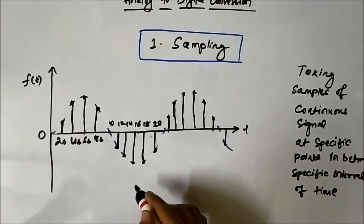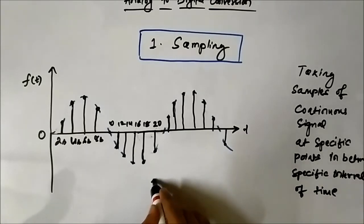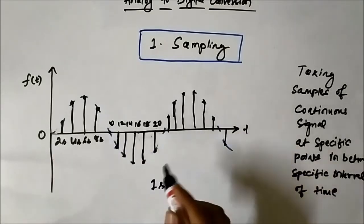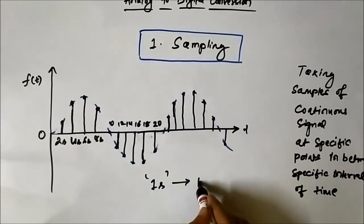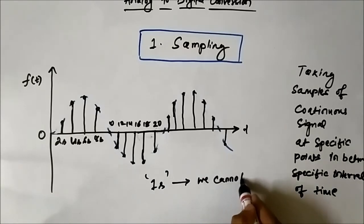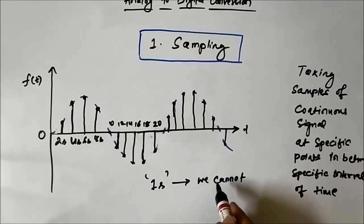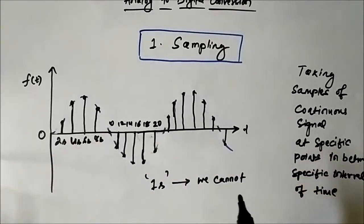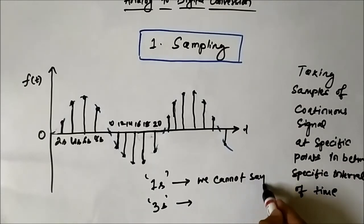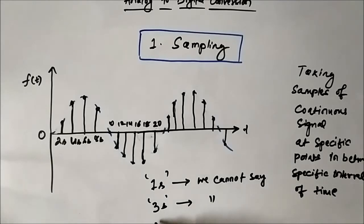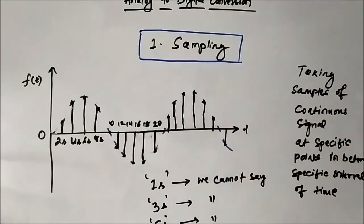Suppose I ask: what is the value of the signal at 1 second? We cannot say, because the signal is not defined at that instant — the sample is not taken at 1 second. Similarly, at 3 seconds or 5 seconds, we cannot say; we do not know. This is what I call sampling — we do not consider all time instances, just specific ones.